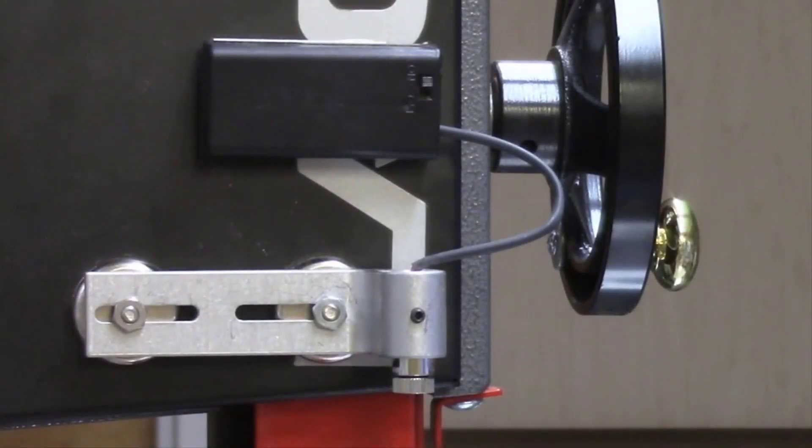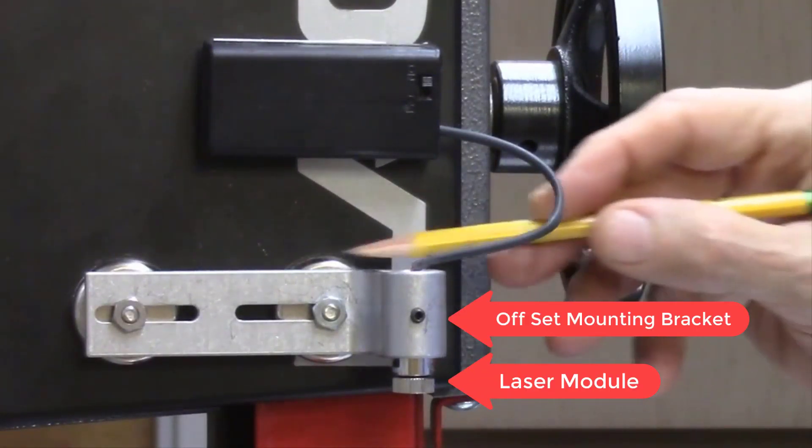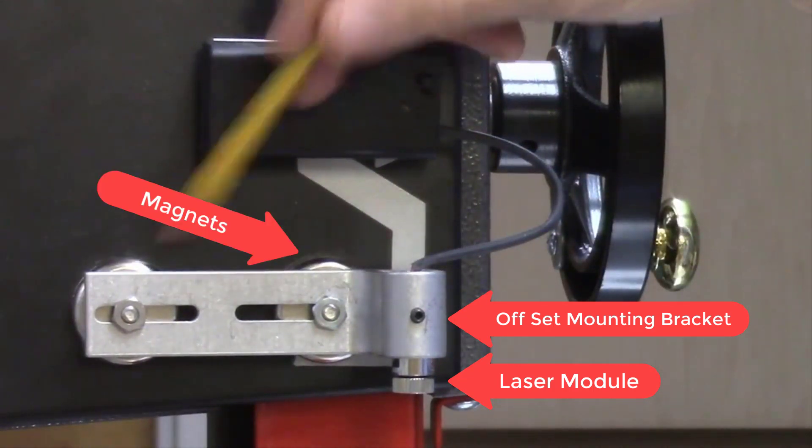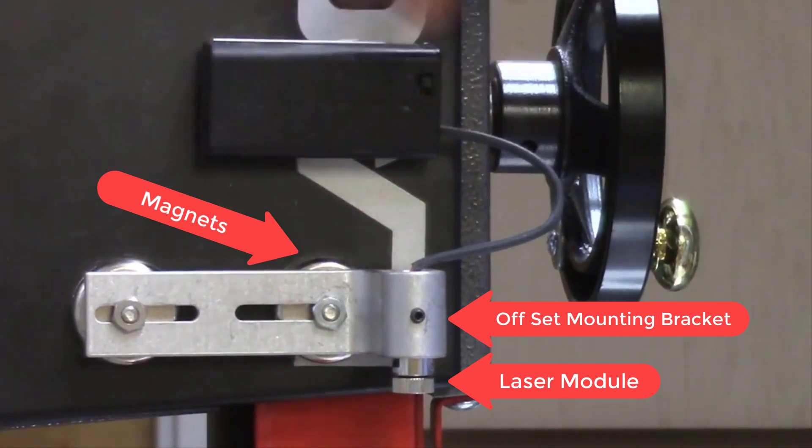The bandsaw laser system consists of a red line laser module mounted in an aluminum offset mounting bracket. Magnets are attached to the bracket to enable the bandsaw laser system to be attached to the top bandsaw wheel housing.